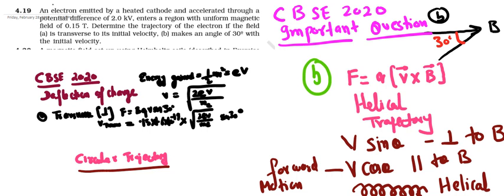One is v sine theta that makes it go around the circle, and then there is another part to the velocity which is the horizontal component v cosine theta that makes it move forward.